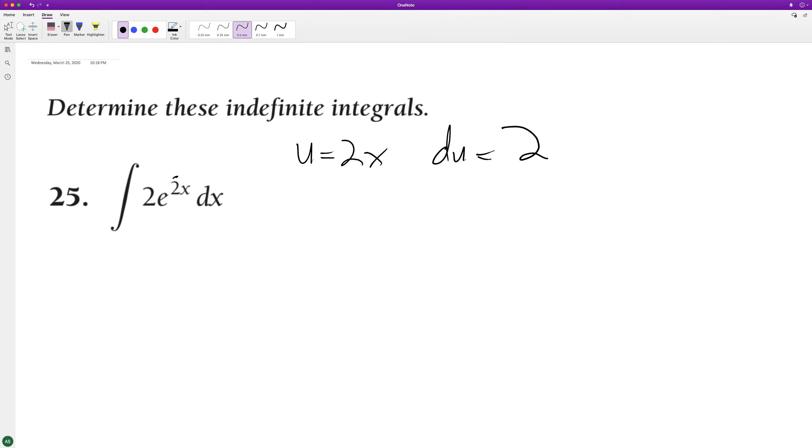And if you look here, aside from the e raised to the 2x, we got 2 and dx. So du is equal to 2dx. So we don't need to do any trick or add anything.